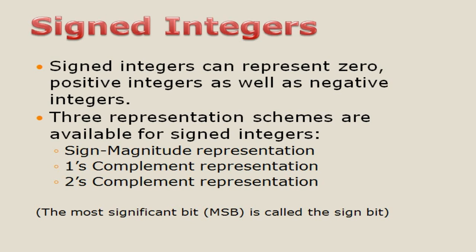The most significant bit, that is the MSB, is called the sign bit. For example, if you give an 8-bit number, you will have 8 digits. The left-hand side first number — from the right it is the last number, from the left it is the first number — that is called the MSB, and you call it the sign bit.